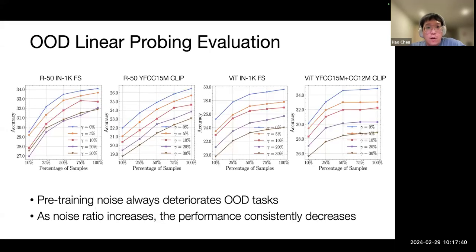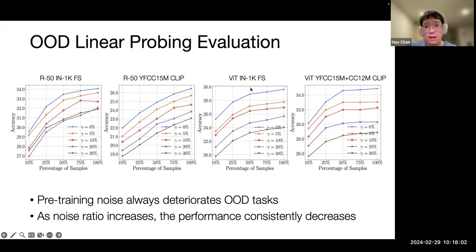On out-of-domain linear probing evaluation, we found a different observation: as soon as any noise is introduced into the pre-training data, the out-of-domain performance consistently decreases. For both ResNet-50 and ViT, and for different pre-training paradigms, the clean pre-training model always performs best on out-of-domain tasks. Once noise is introduced, performance monotonically decreases.